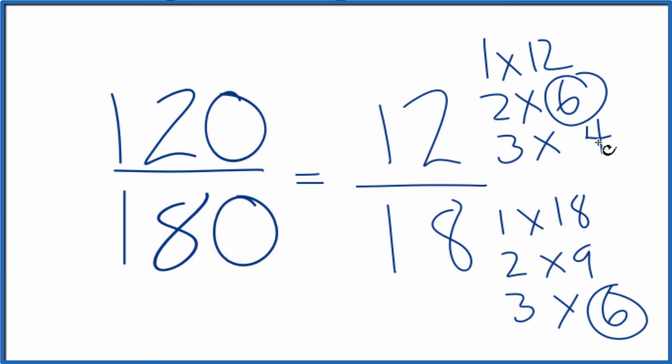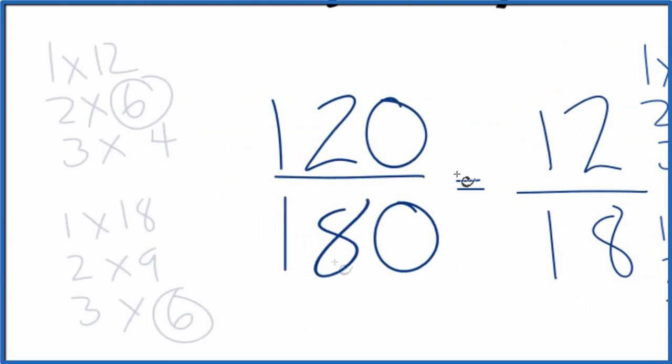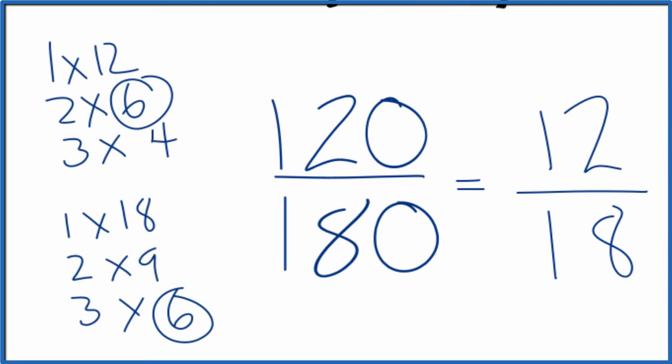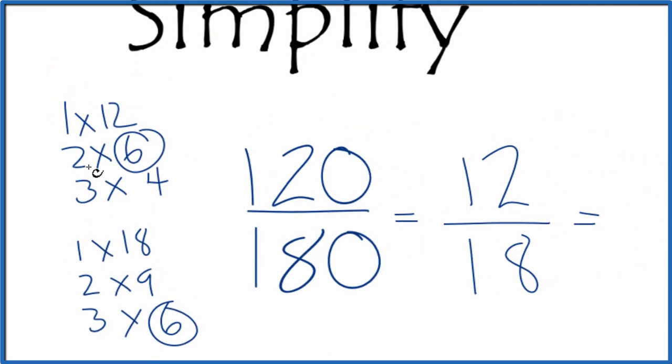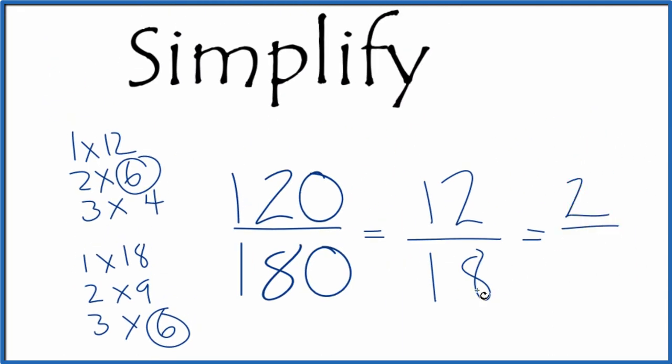So let me move these over here. And now that I know 12 divided by 6, that's 2. And 18 divided by 6, that's 3.